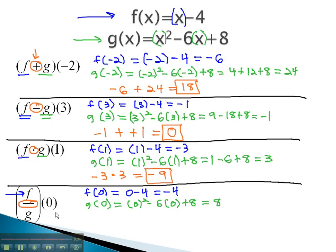Here, we are asked to divide these two answers, f over g. Negative 4 over 8 reduces to negative 1 half.